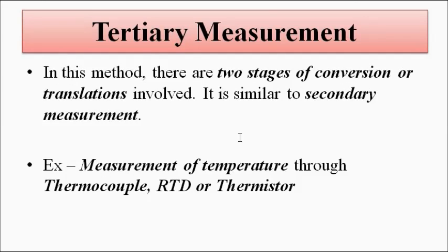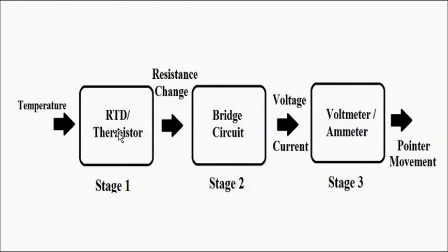In tertiary measurement, two stages of signal conversion occur — or more. Using the RTD or thermistor example: the thermistor or RTD has a temperature coefficient of resistance, meaning whenever there is a change in surrounding temperature, they exhibit a change in resistance depending on whether they have a positive or negative temperature coefficient. So the temperature change corresponds to a resistance change.